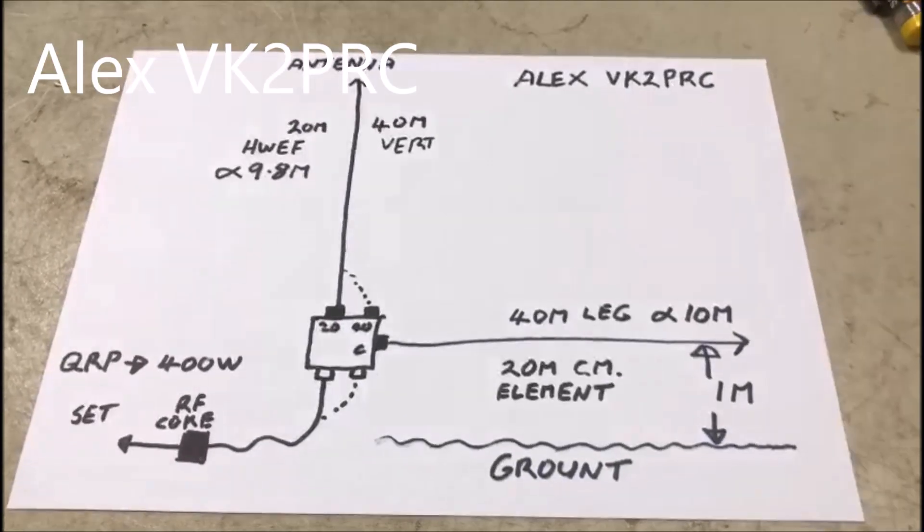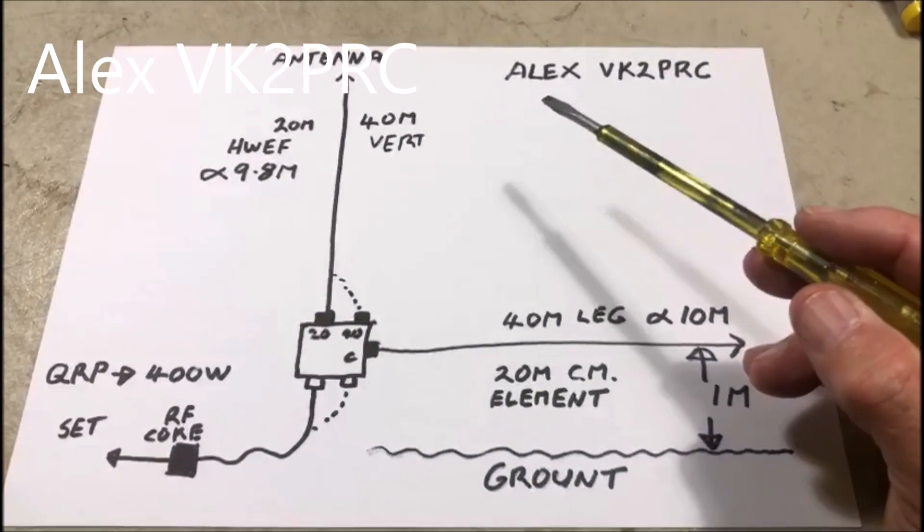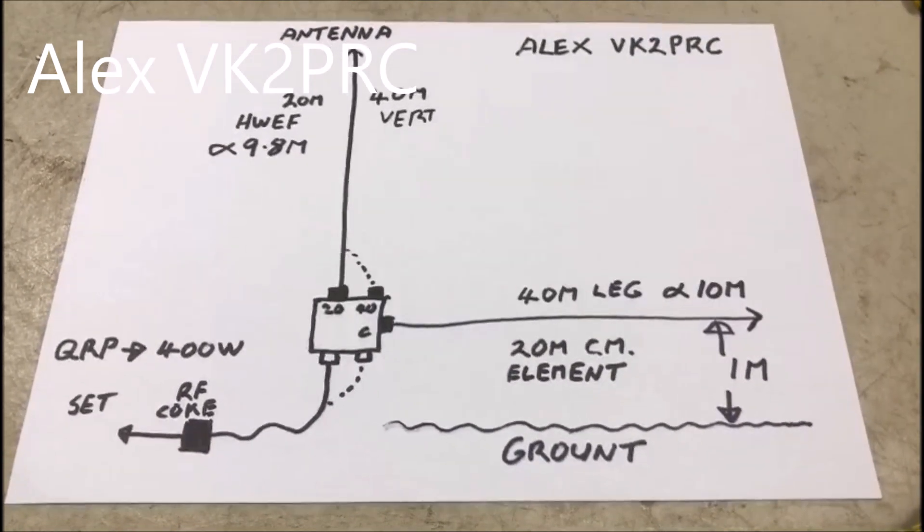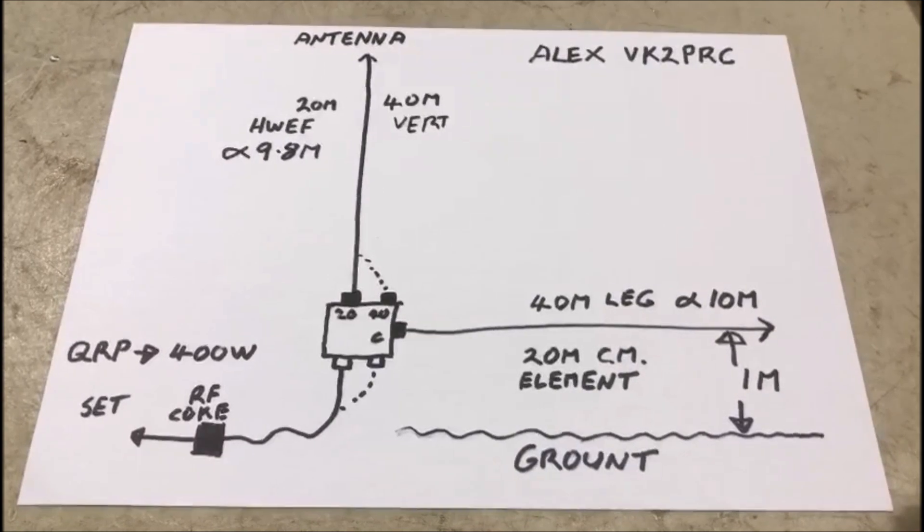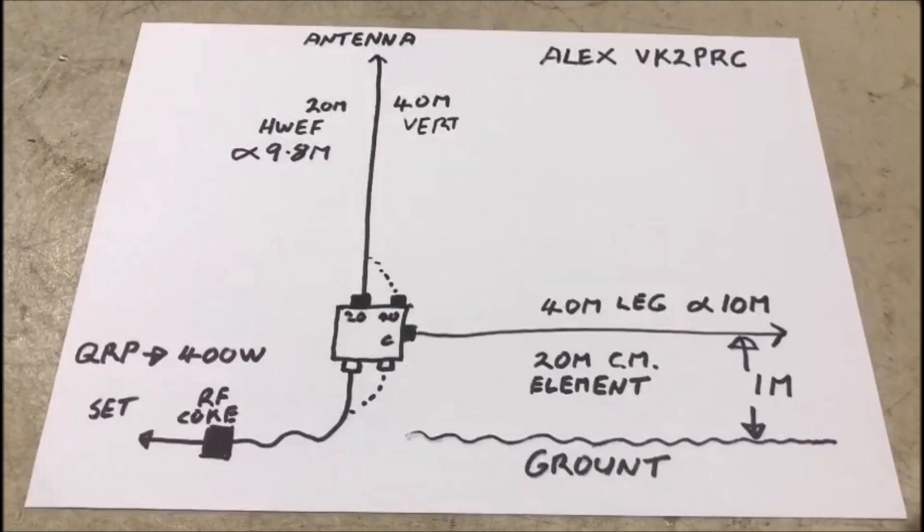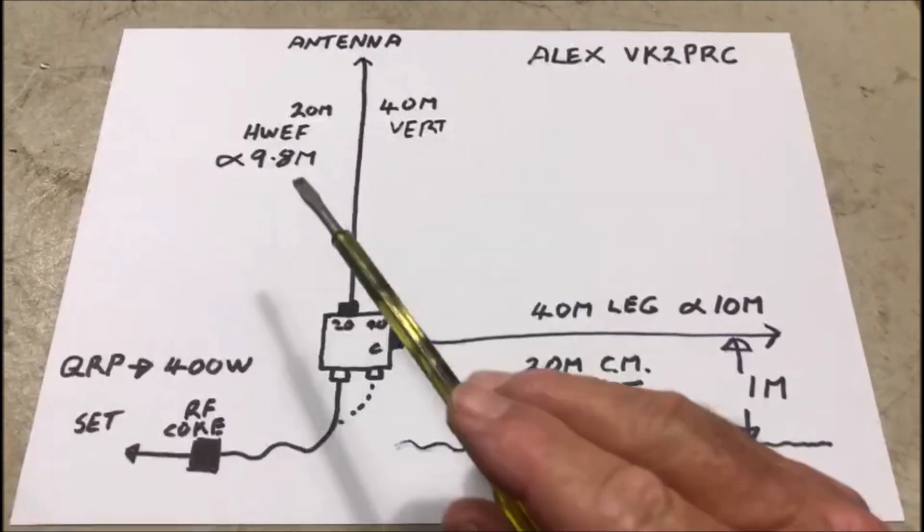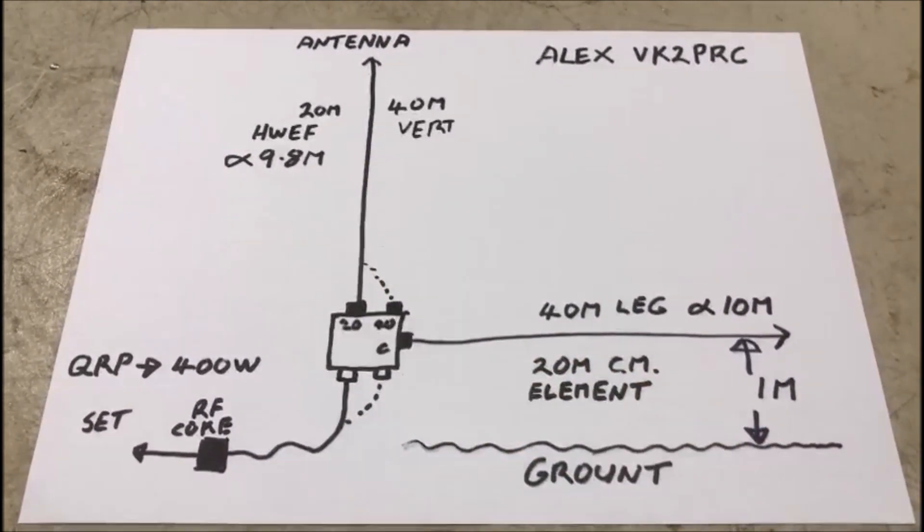Hello fellow hams, it's Alex here Victor Kilo 2 Papa Radio Charlie over here in Australia. For those people familiar with my YouTube channel, a couple of the videos that I have up on the channel relate to half wave NFED vertical for 20 meters.